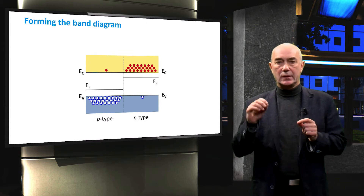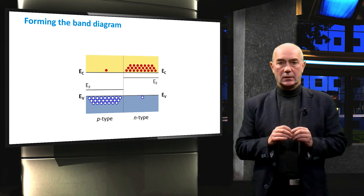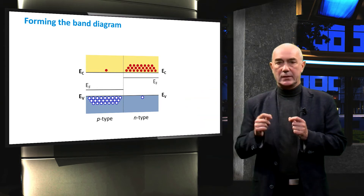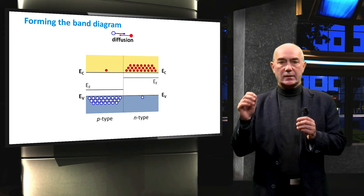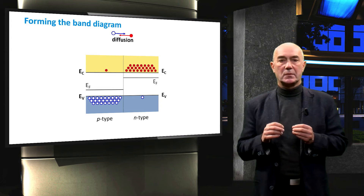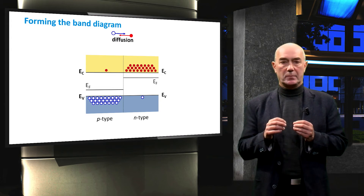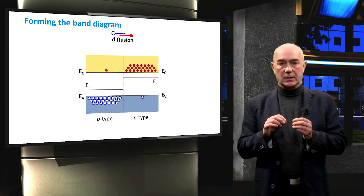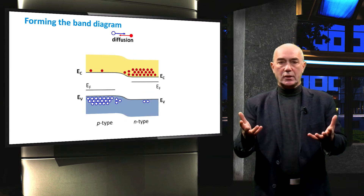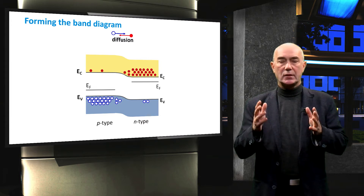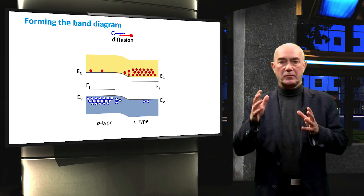Now let's put these two materials together to form the PN junction. You may think that we could draw the band diagram of the PN junction just by combining the two, but this is not the case. As I said in the previous video, the concentration gradients of the charge carriers cause holes to diffuse from the P-type semiconductor material to the N-type semiconductor, and electrons will diffuse from the N-type semiconductor to the P-type semiconductor material.